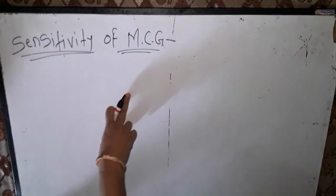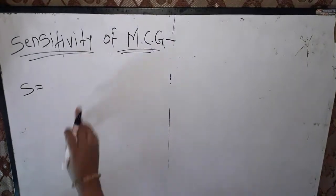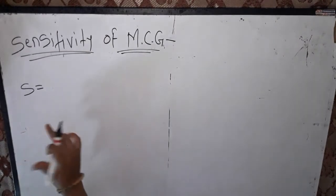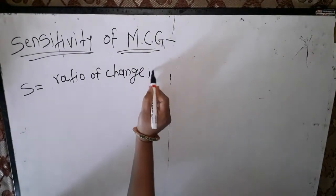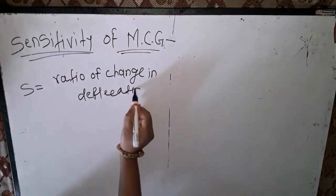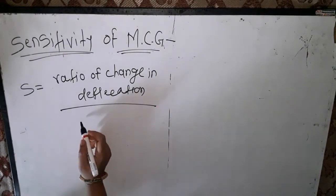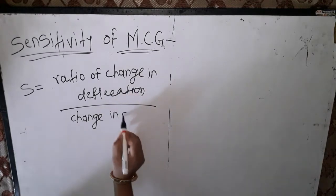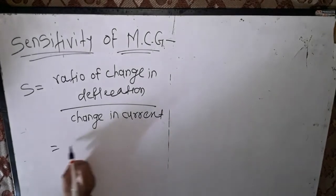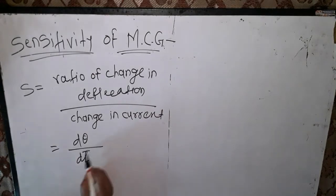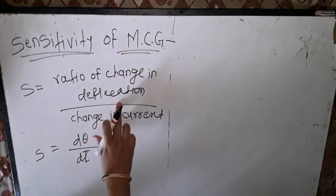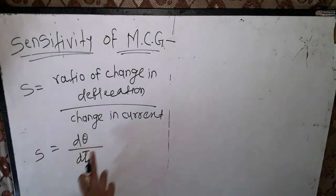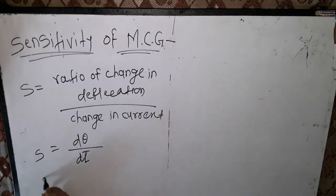The sensitivity of MCG (Moving Coil Galvanometer) is defined as the ratio of change in deflection to change in current. That is, S is equal to dθ/di — the ratio of the change in deflection with respect to the change in current.